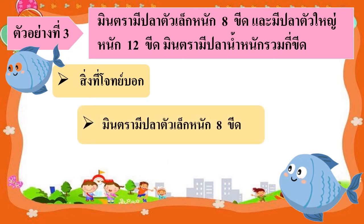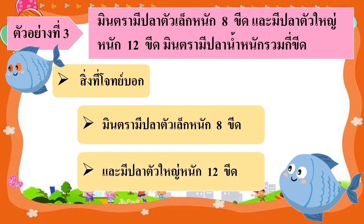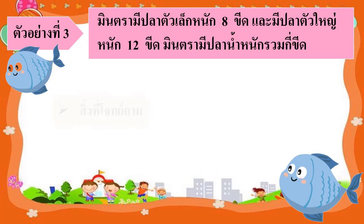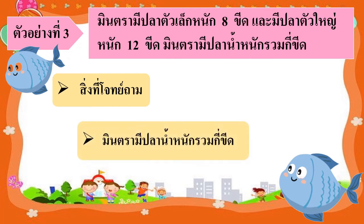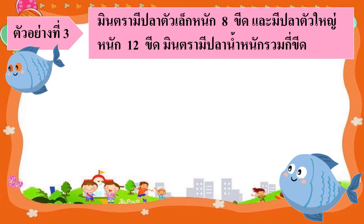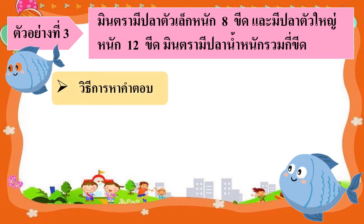สิ่งที่โจทย์บอกคือ มินตรามีปลาตัวเล็กหนัก 8 ขีด และมีปลาตัวใหญ่หนัก 12 ขีด สิ่งที่โจทย์ถามคือ มินตรามีปลาน้ำหนักรวมกี่ขีด วิธีการหาคำตอบ จากโจทย์มินตรามีปลาน้ำหนักรวม